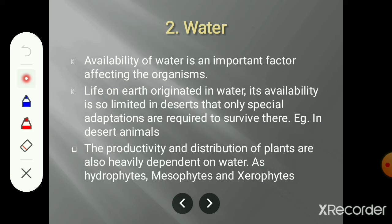We are going to learn about desert animals and desert plants. Plants, depending upon the availability of water and their distribution on the geographical area, are classified as hydrophytes, mesophytes, and xerophytes.